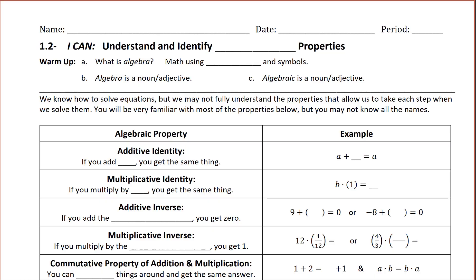We are now in section 1.2. Here's the 'I can' statement: I can understand and identify algebraic properties. So here's how we're going to spell this — algebraic properties. Algebraic, it's like algebra with 'IC' on the end. And that's what we're going to be talking about today.